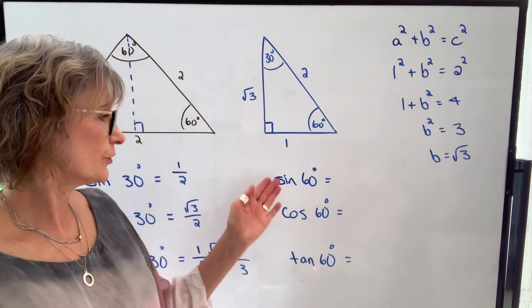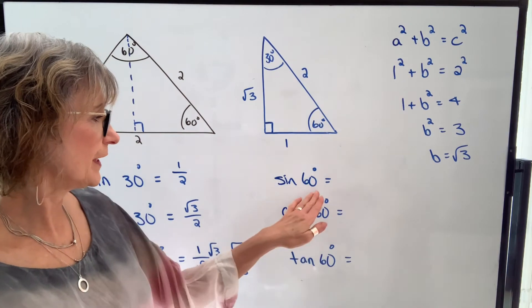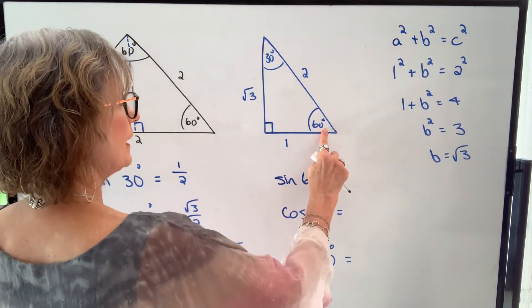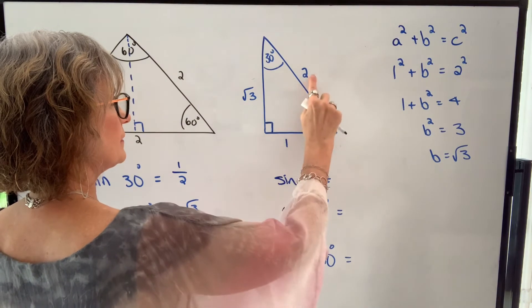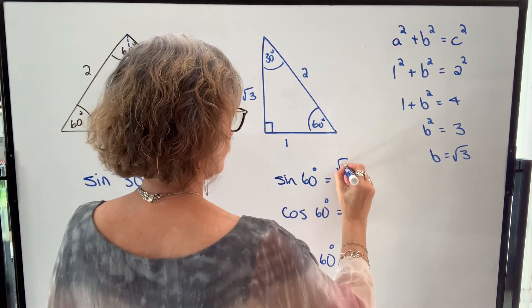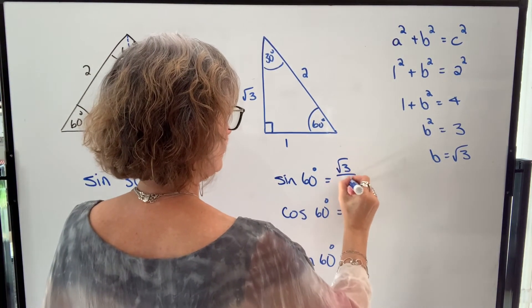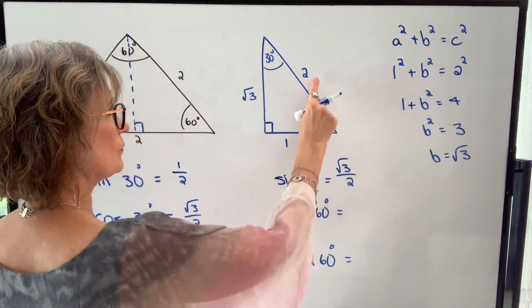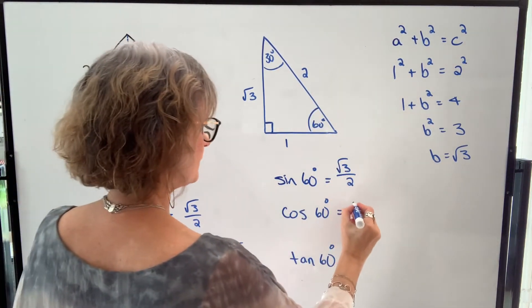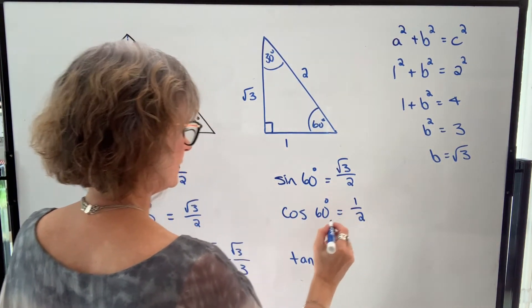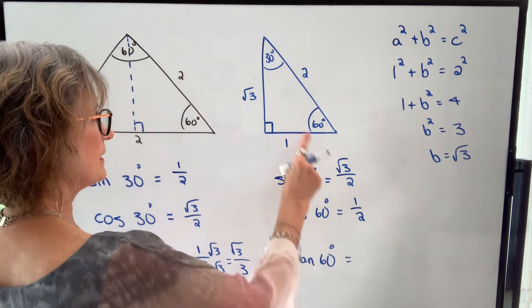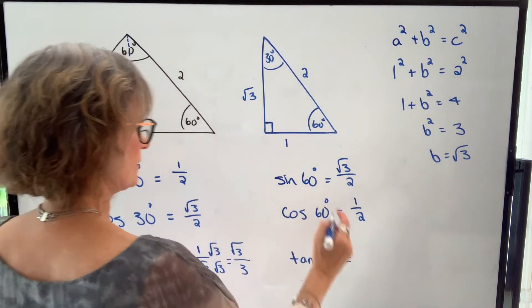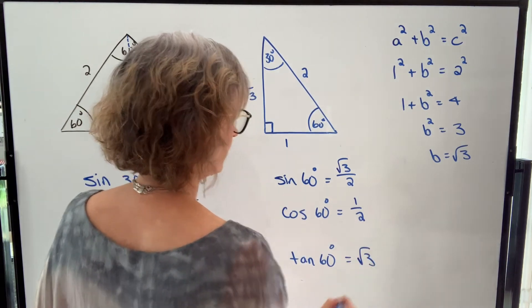Now for the trig functions when the angle is 60 degrees. Sine of 60 is opposite over hypotenuse — root three over two. Cosine of 60 is adjacent over hypotenuse — one over two. Tangent of 60 degrees is opposite over adjacent — root three over one, which is just root three.